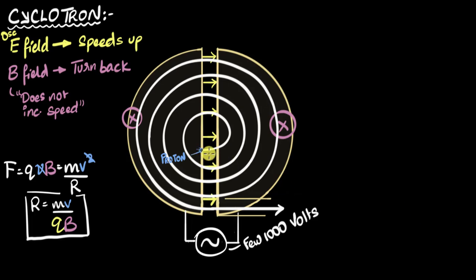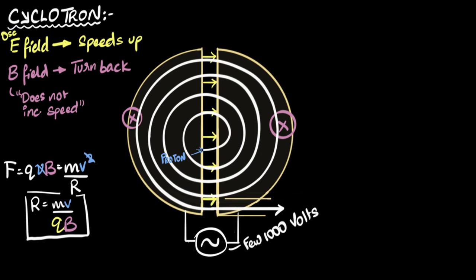We've seen how cyclotrons can accelerate heavy nuclei using just a few thousand volts. The whole idea is that it uses oscillating electric fields to accelerate the charged particle a little bit, but then the magnetic field makes it turn and re-enter the electric field so that it can keep accelerating over and over again, and eventually when it reaches the maximum radius, it can be shot out with very high speed. Now in this video, we want to talk about how do we ensure that the electric field flips at the right moment.